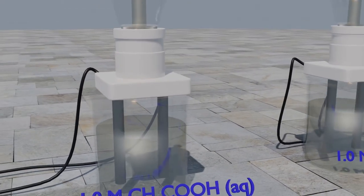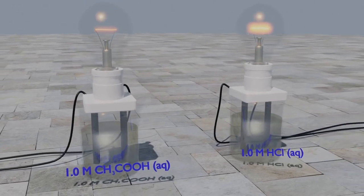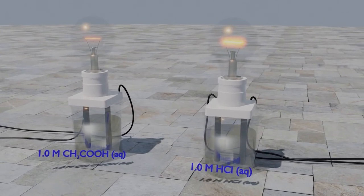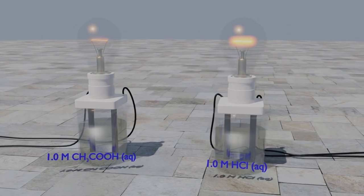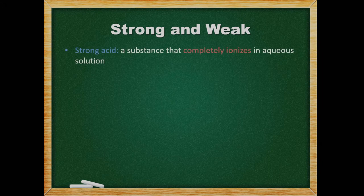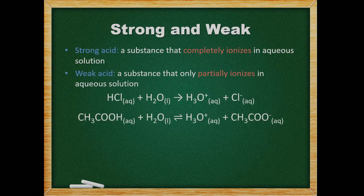Ions need to be present for a solution to conduct electricity. Although both acids are the same concentration, the hydrochloric acid conducts electricity much better than the acetic acid. Water splits some or all of the acid molecules into ions through a process called ionization. Strong acids ionize completely, while weak acids only partially ionize. Hydrochloric acid is a strong acid, so it ionizes completely. Note the equation uses a one-way arrow. We can see that acetic acid conducts electricity poorly, inferring that there are fewer ions in solution and most molecules of acetic acid remain intact. Therefore, acetic acid is a weak acid.